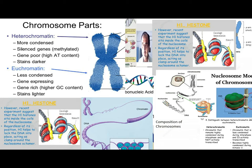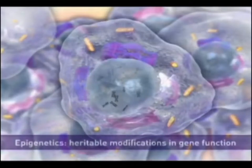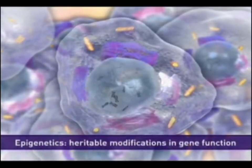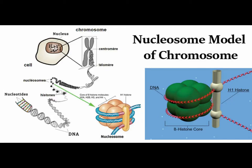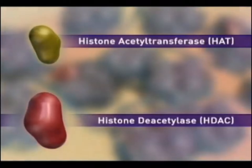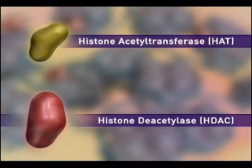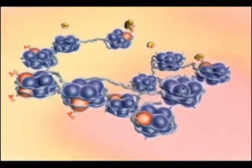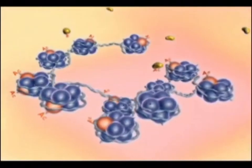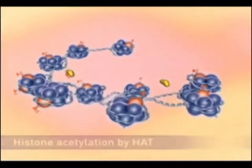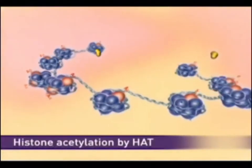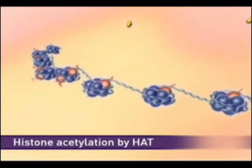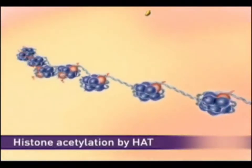Bismillahirrahmanirrahim. We are studying chapter number 20 of biology — secondary biology. Today's topic is the composition of chromosomes: how this long DNA fiber coils so tightly. If we gently disrupt a eukaryotic nucleus and examine the DNA with an electron microscope, we find that it resembles a string of beads. Every 2200 nucleotides, the DNA complex is coiled around a core of